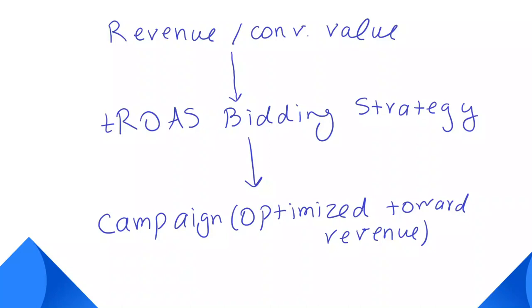The most common case of using target ROAS is for e-commerce websites, where a user buys a product and pays the price right away. For businesses that capture leads on their websites, they can still use target ROAS by assigning a value to their conversions. A common way of doing this is to import revenue data from your CRM or your Google Analytics to Google Ads.